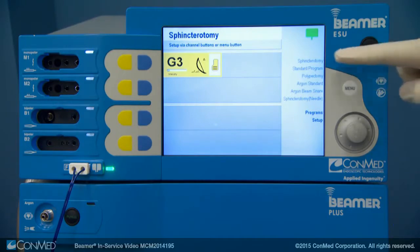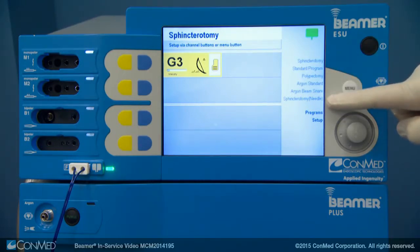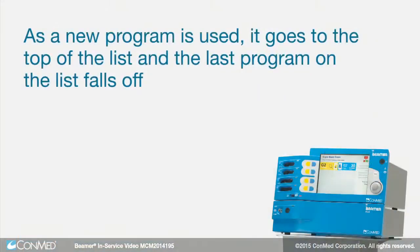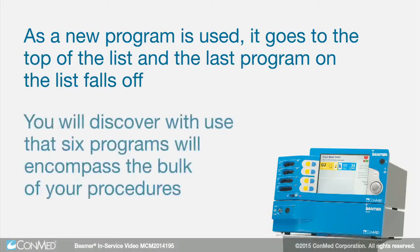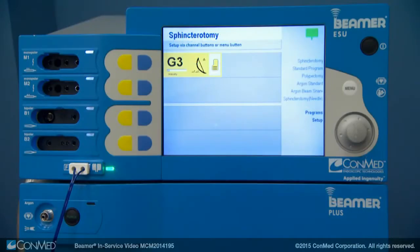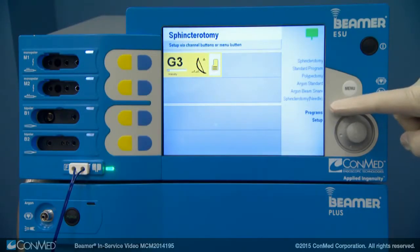This on-screen menu is a list of the six most recently used programs. As a new program is used, it goes to the top of the list and the last program on the list falls off. You will discover with use that six programs will encompass the bulk of your procedures. Below the list of programs are two other selections: programs and setup.